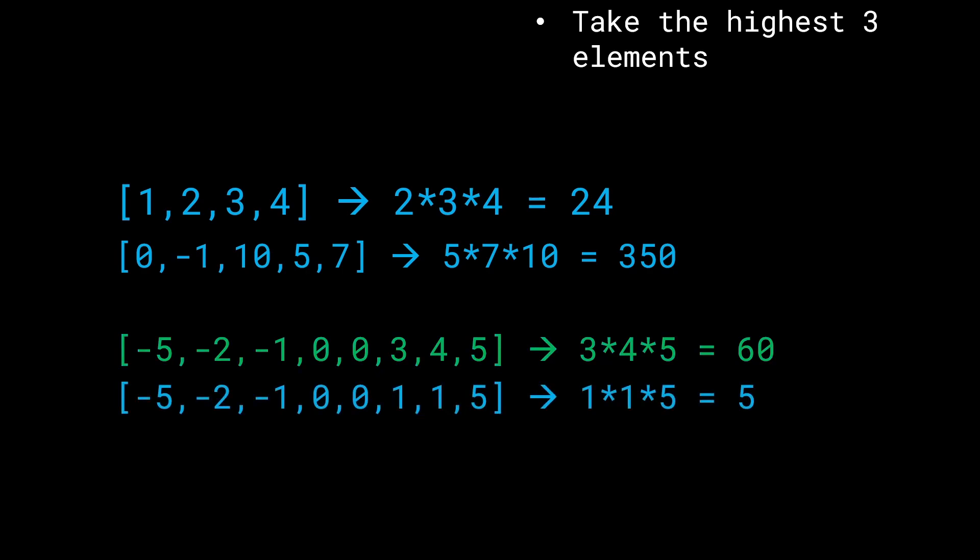As I mentioned, it's always a good idea to find test cases for which this logic might not work. In this case, it's the test case [-5, -2, -1, 0, 0, 1, 1, 5]. Again, the array is sorted for convenience. If we multiply 1, 1, and 5 together, which are the highest 3 elements, we get 5. But this is incorrect.